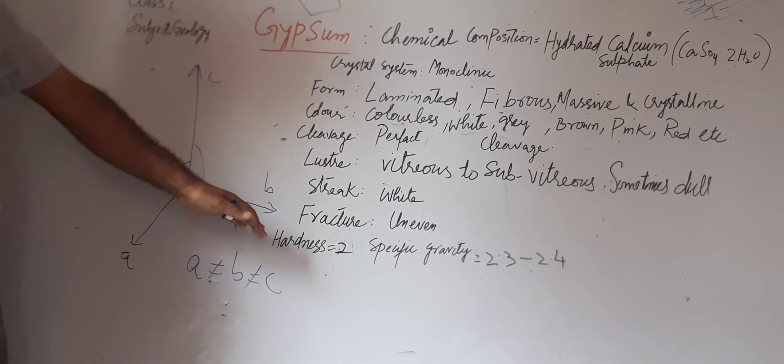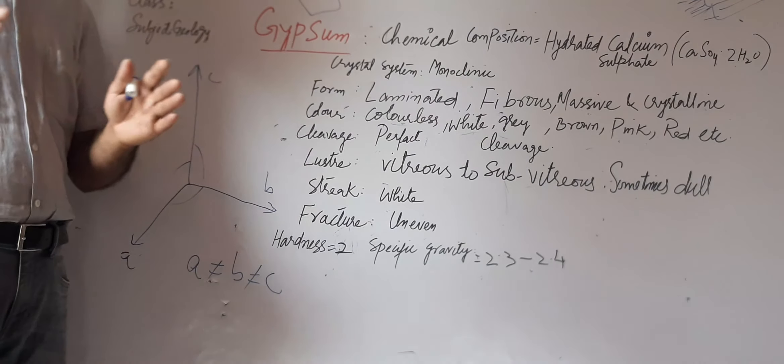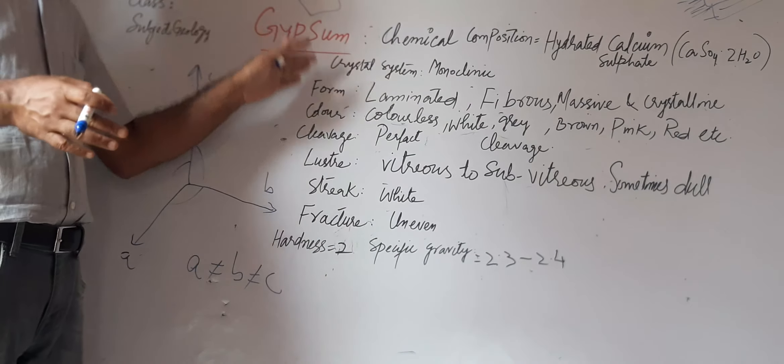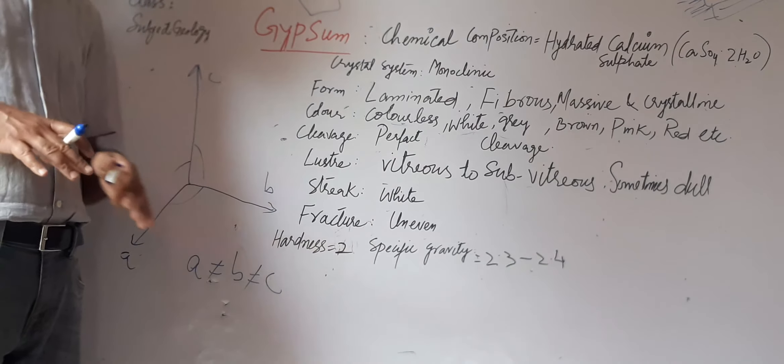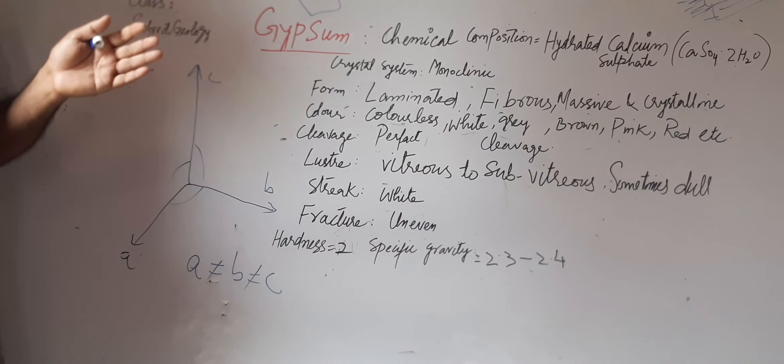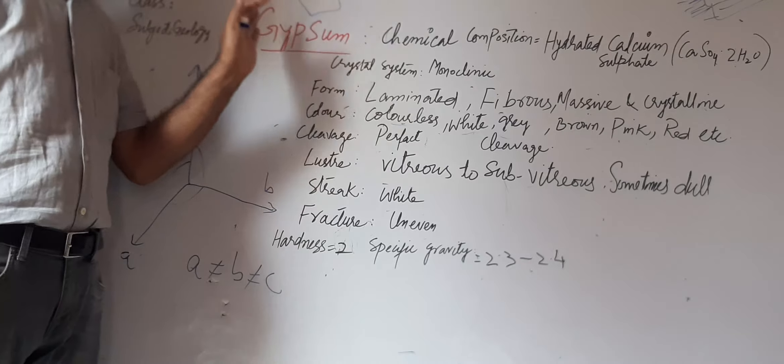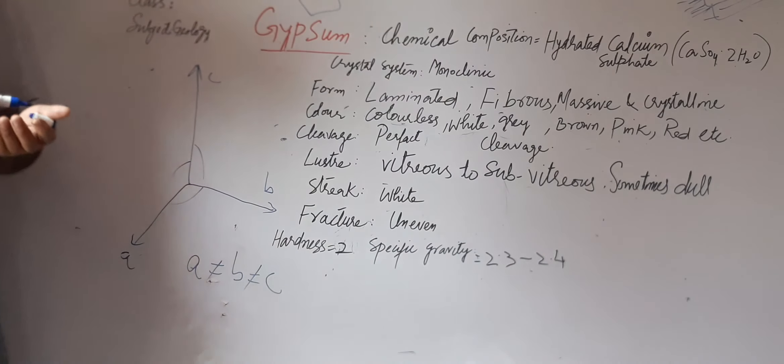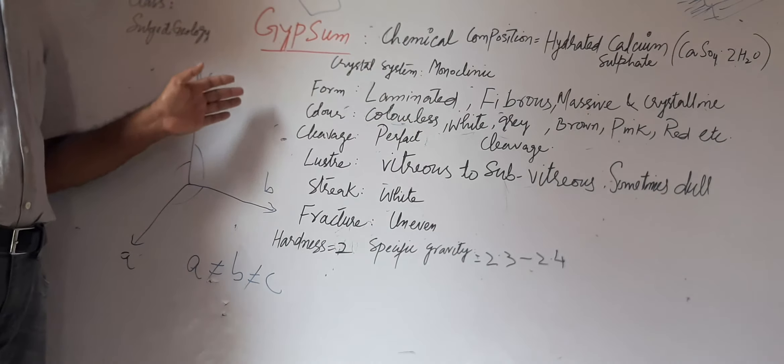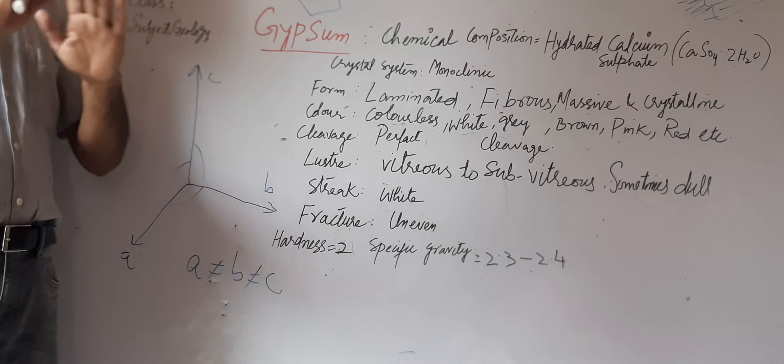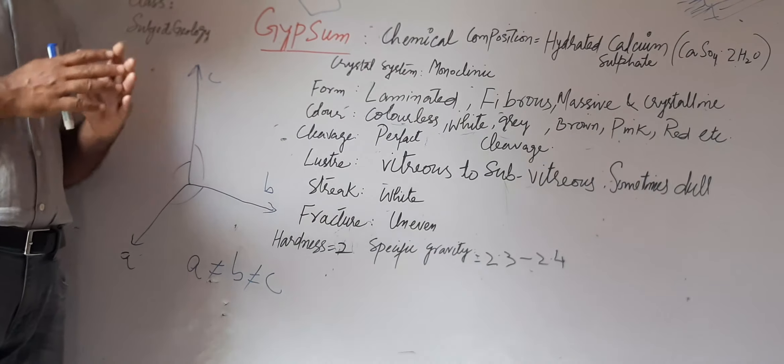As we have to make sure, the hardness is 2. The specific gravity is determined by Jolly's balance, which is 2.3 to 2.4. These properties we can use to identify minerals—the properties of the mineral.